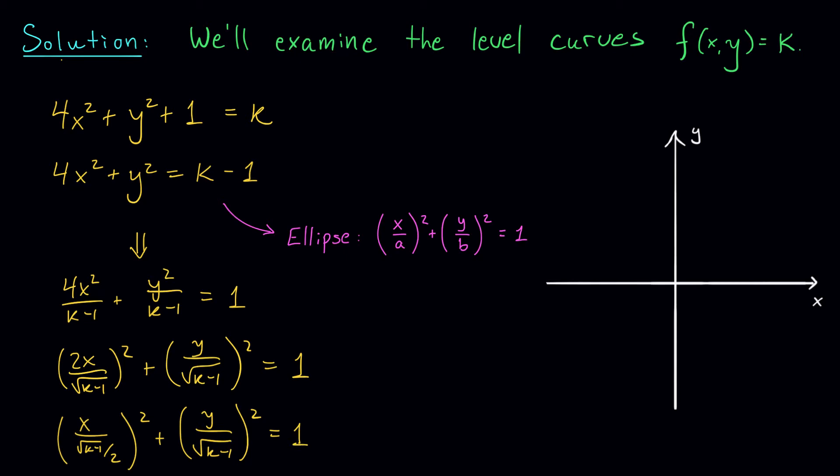All right, so here my a value is √(k-1)/2. My b value is √(k-1). This tells me that in the x direction, my ellipse has a minor axis whose radius is √(k-1)/2. It has a major axis in the y direction that's twice as long. The radius is √(k-1).